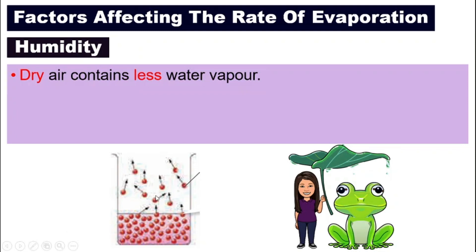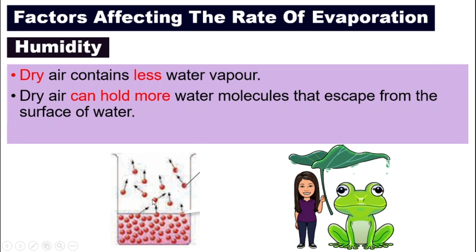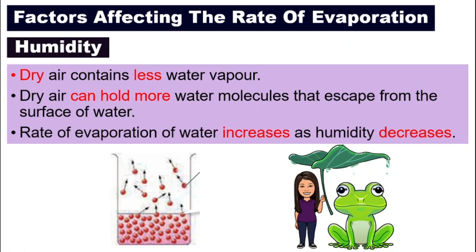Look at this diagram. If the air up here is dry, that means there is not much water vapor here. That means the water molecules can escape easier, because the dry air has bigger space — it can hold more water molecules, it has more space. So there are more water molecules that can escape the surface and change into water vapor. The rate of evaporation of water increases as humidity decreases — it is the opposite.